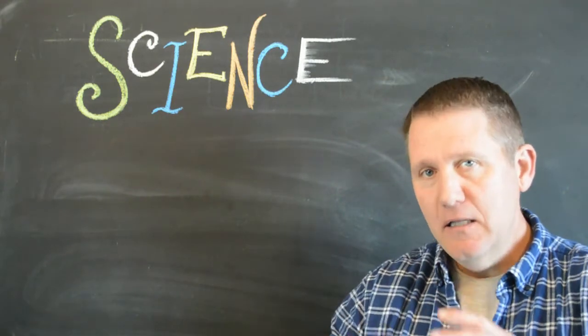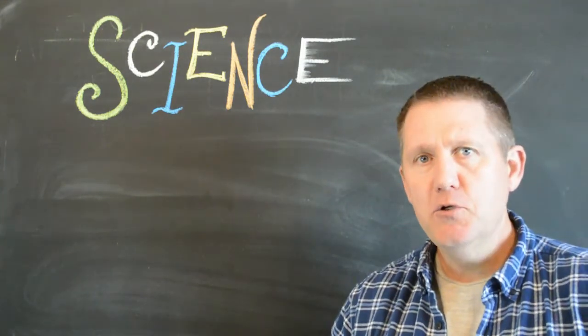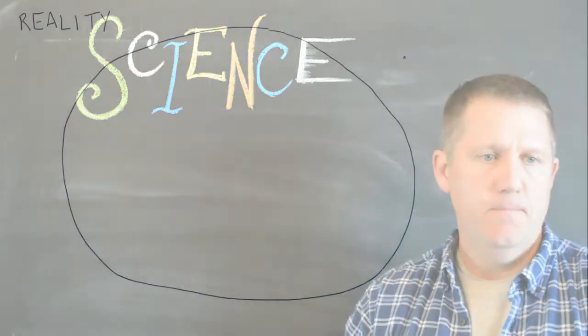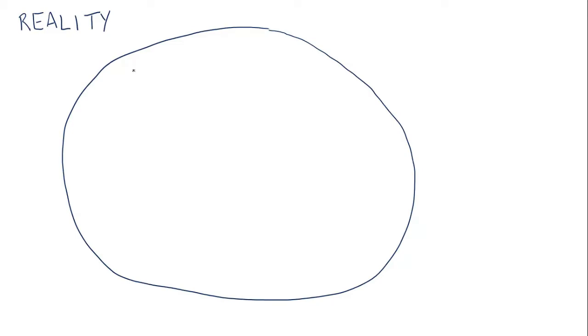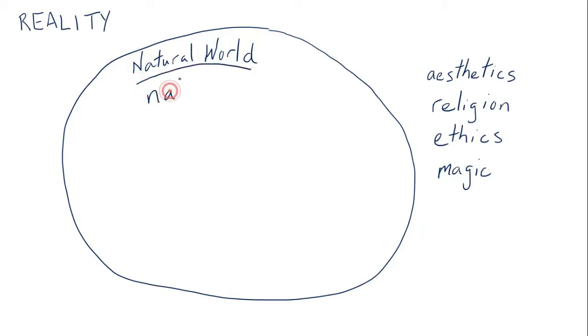Science itself is a limited scope of study. And I'll demonstrate it this way. So let's say this entire screen represents reality, and the part inside the circle is the part of the world that is the natural world. So there are things outside of the natural world that are also real, things like aesthetics, religion, ethics, maybe even magic. Depending on your opinions, you might think that these things are real or imaginary, but I think most people would consider these things real to one extent or another. But they're not governed or part of the natural world. They're not governed by natural laws.